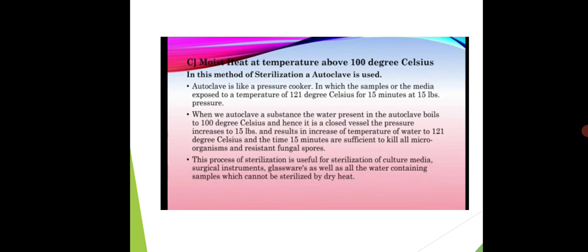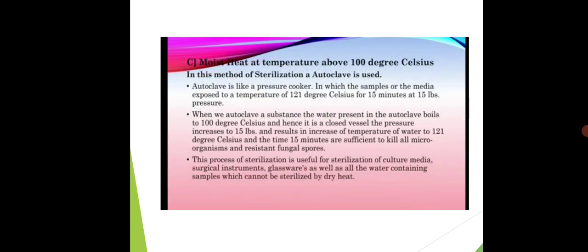The autoclave works on the principle of moisture. It is operated at 121°C with a pressure of 15 lbs for 15 minutes. When 121°C temperature and 15 lbs pressure are reached, the autoclave is maintained for 15 minutes for the complete process of sterilization, killing all microorganisms present on glassware or in media. This concludes the discussion of temperature below, at, and above 100°C. The two remaining methods — filtration and radiation — will be discussed in the next video.